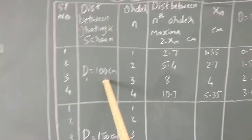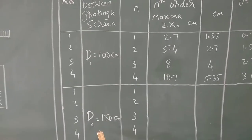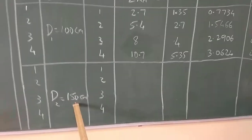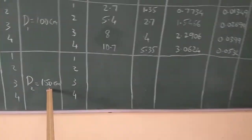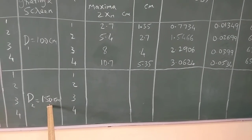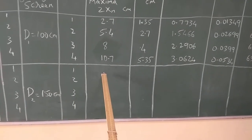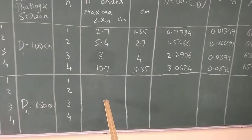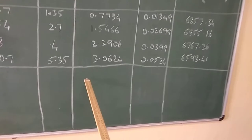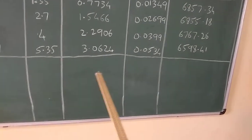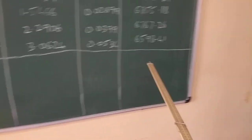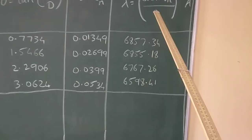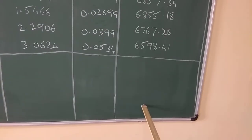Now the distance between the grating and the screen is increased by another 50 centimeters, that is for 150 centimeters. For 150 centimeters, we put the graph sheet once again, make the markings up to the fourth order, carry out the same calculations, find the wavelength once again, and then get the mean of all those values.